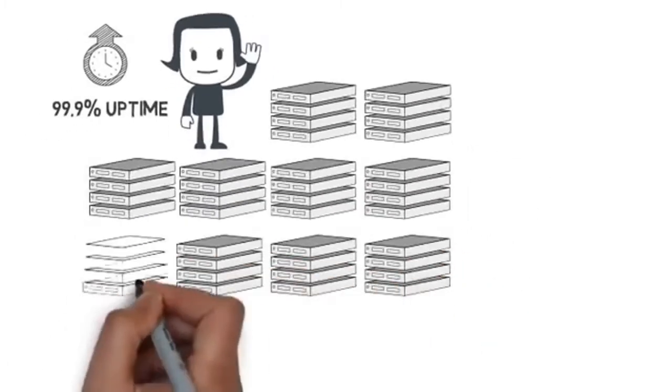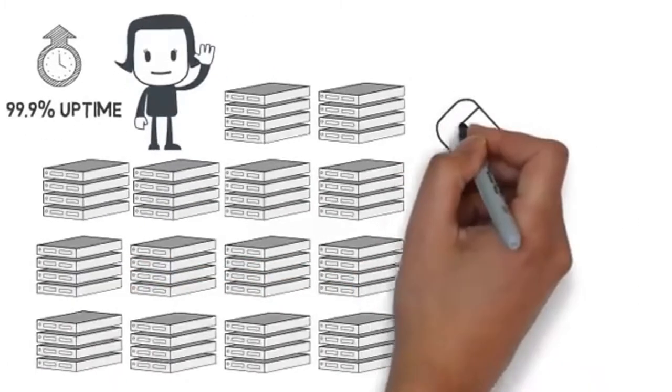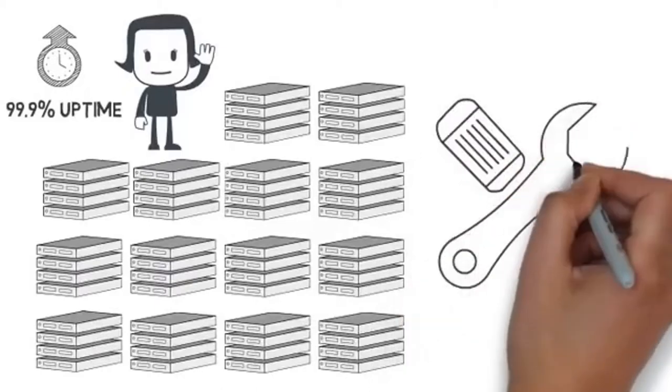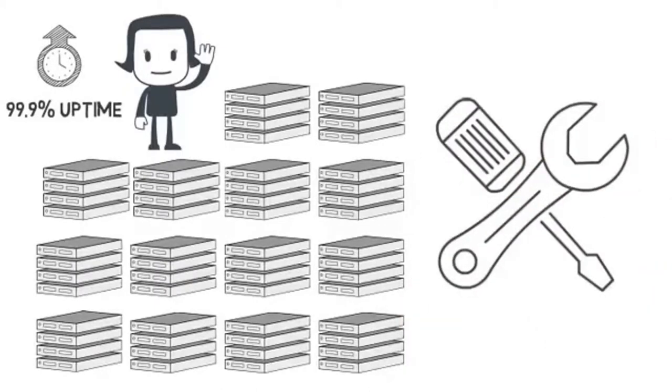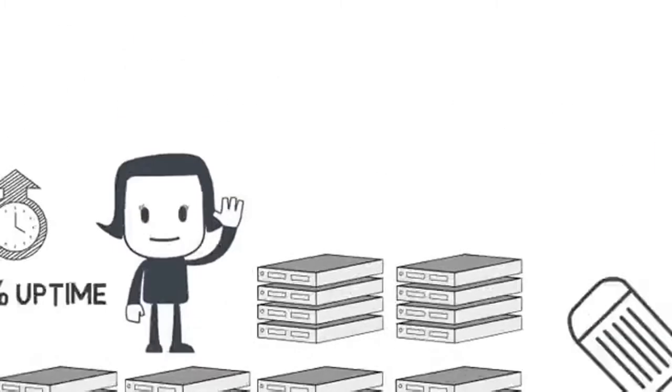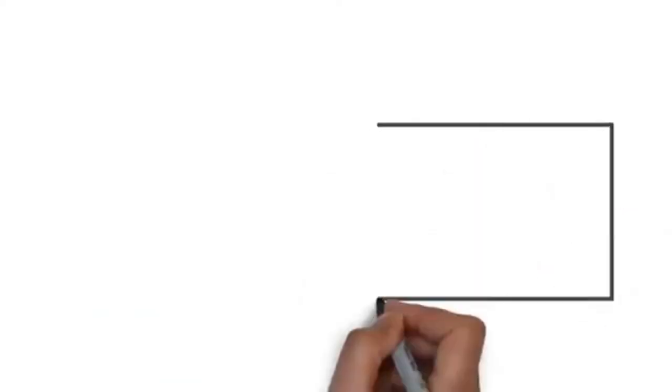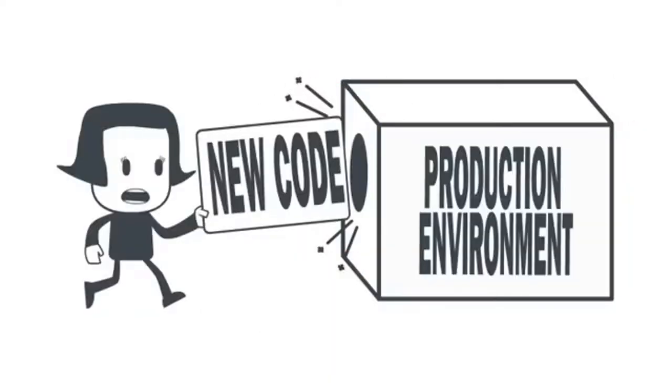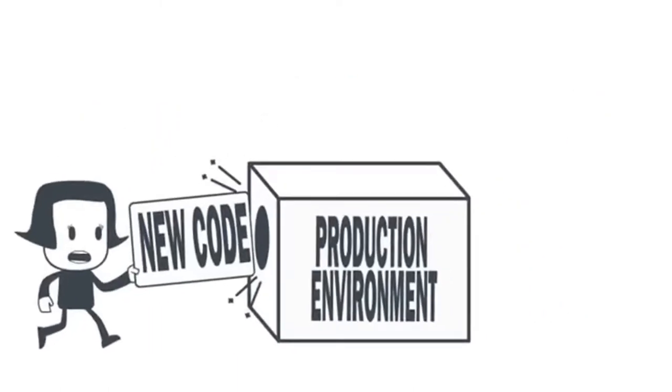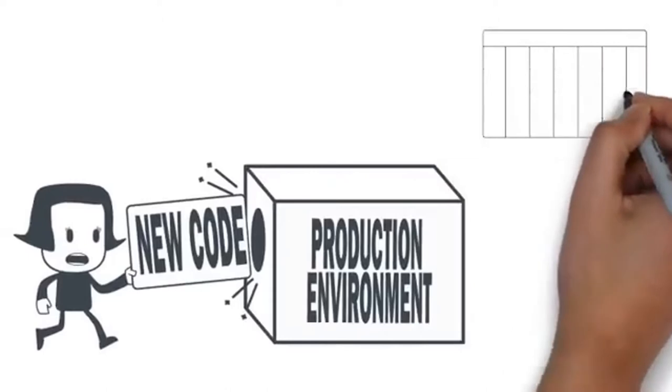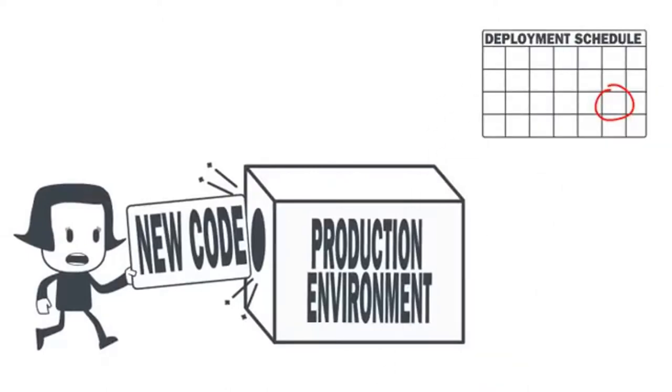This increase of servers has caused some challenges for Anna. The tools that she used to administer a few servers are not as effective when used to administer a much larger volume of servers. This challenge affects how new code is deployed in her production environment. Usually when new code is released it takes a little massaging to fit into the production environment. This is why she requires code deployments to be scheduled and are only allowed once a month.